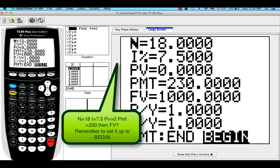And then do Alpha Solve, and voila! We have the future value of an annuity due. How easy was that?